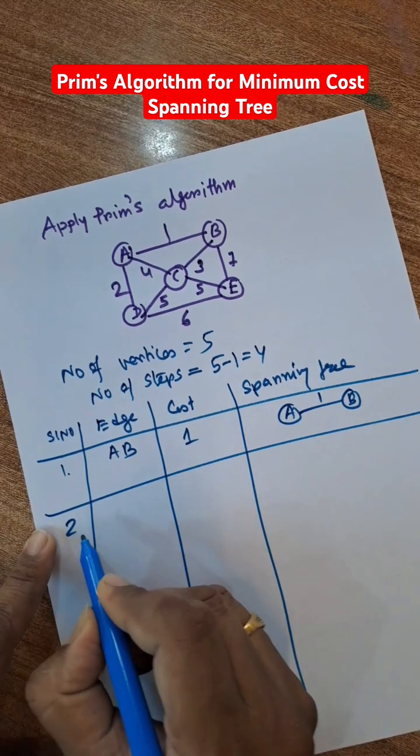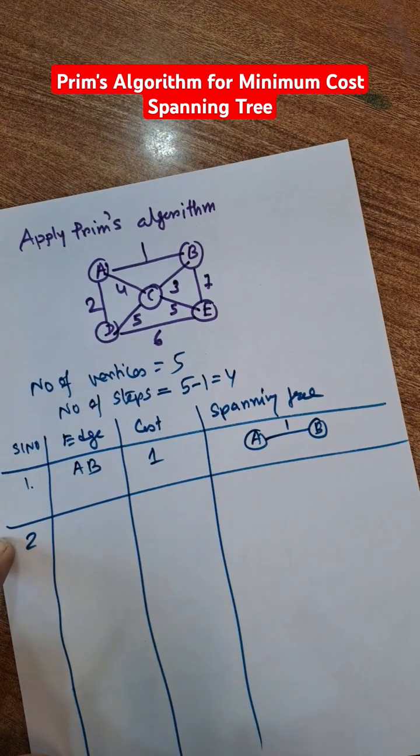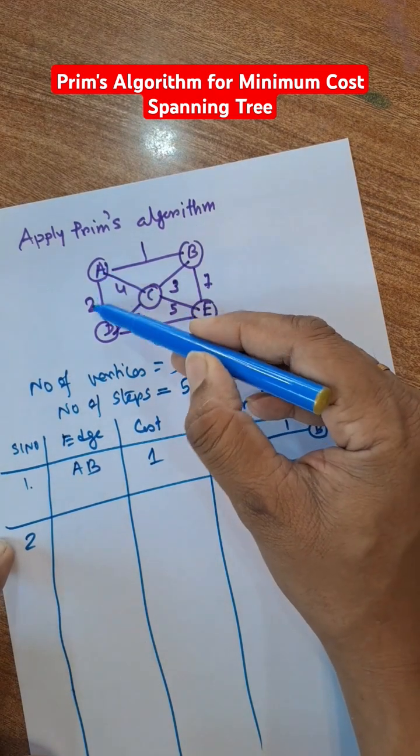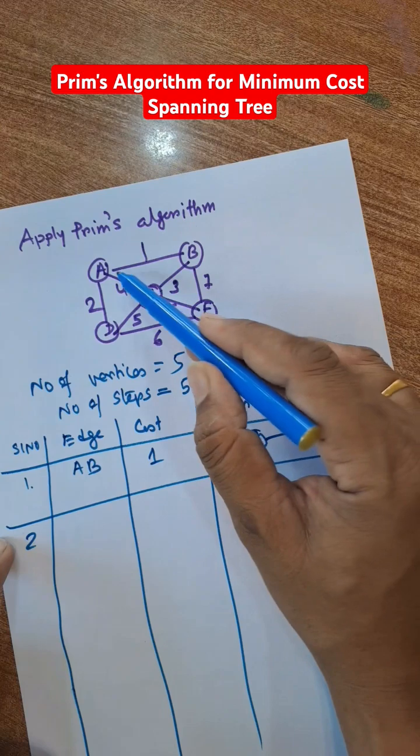Next, step 2. Select the next minimum which is connected to either A or B. Here D is connected with cost 2, C is connected with cost 3, C connected with cost 4,